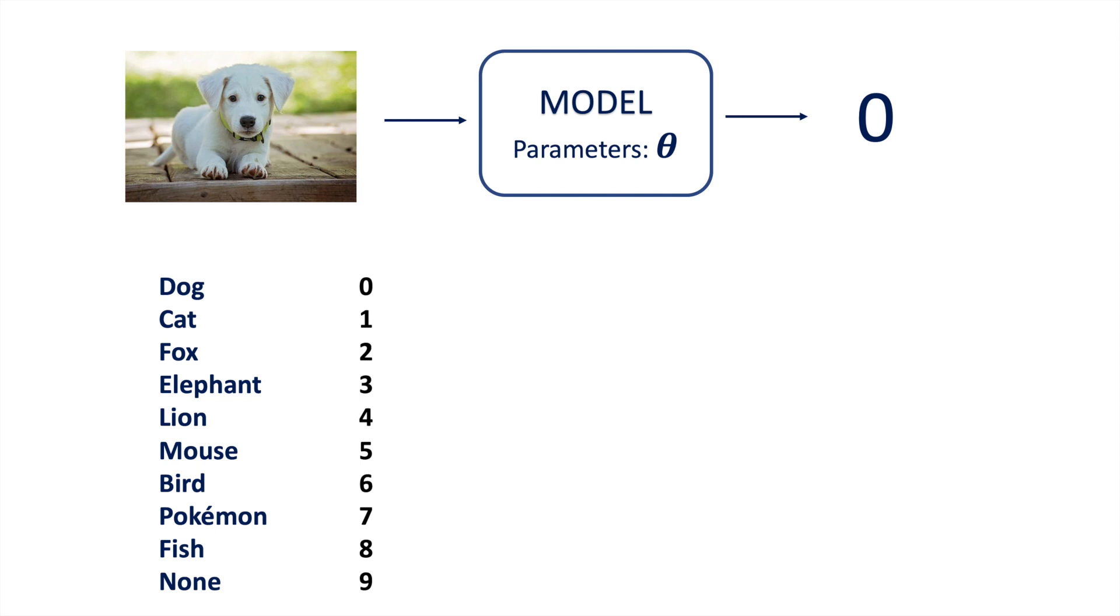However, probabilistic theory argues that the most natural output would be an entire probability distribution. For example, if given this image here, a well-calibrated model could say that yes, there is a 99% chance that this is an image of a dog, but there's still a 0.1% chance that this could be of any other class.